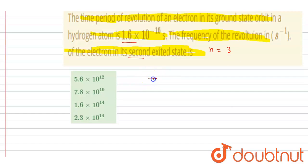If I talk about the time period, we know that it is 2π rn by vn for any nth orbit. And we know that this rn is directly proportional to n square and vn is inversely proportional to n.